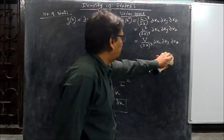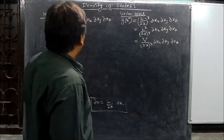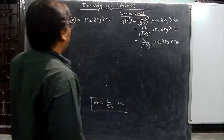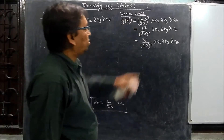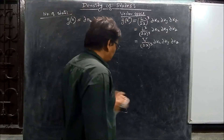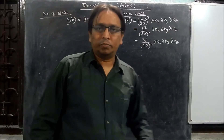This is the first key result to remember: the number of states g(n) = δnx·δny·δnz, and the density of states in vector space g(k) = (L/2π)³ · δkx·δky·δkz.